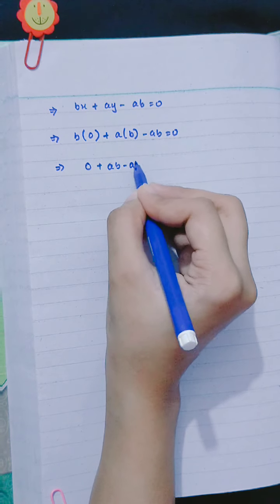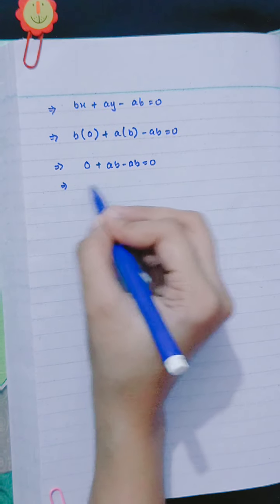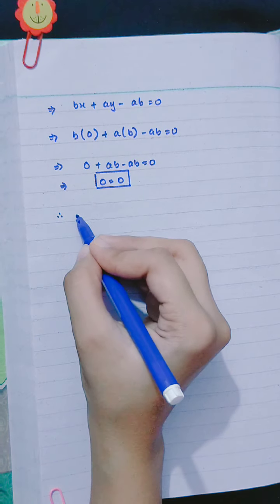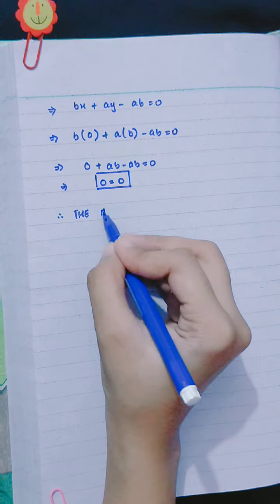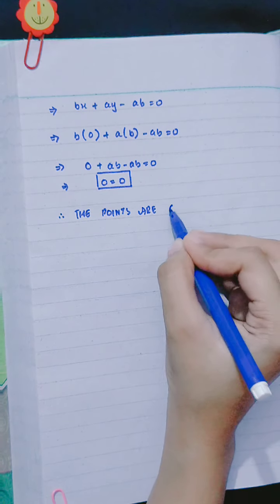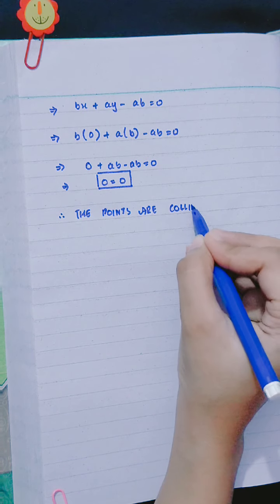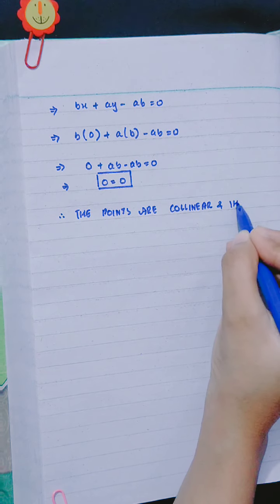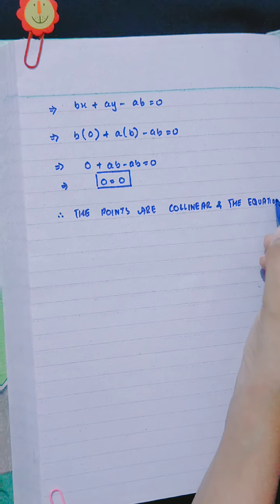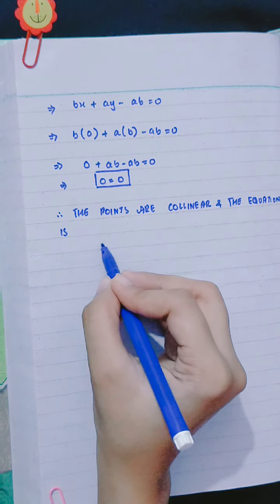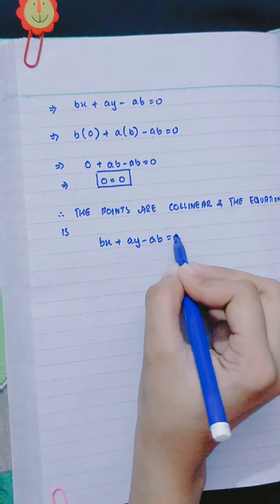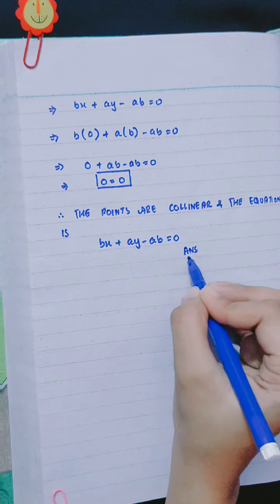0 plus ab minus ab equals to 0, giving us 0 equals to 0. Therefore, the points are collinear and the equation is bx plus ay minus ab equals to 0.